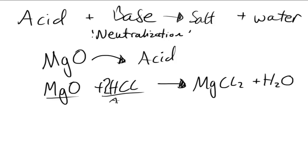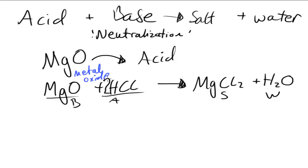As you can see, the base and the acid produce a salt and water. This is one which involves a metal oxide. In this reaction, the metal oxide — magnesium oxide — is acting as the base, and HCl is the acid.